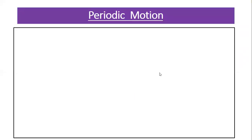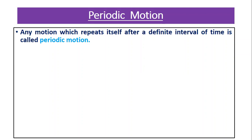Let me start the first article from this chapter: periodic motion. Simple examples of periodic motion include the motion of the needle of a sewing machine and uniform circular motion, which is also periodic motion. Basically, periodic means something that repeats — day and night are periodic. The motion which repeats itself after equal intervals of time is called periodic motion.